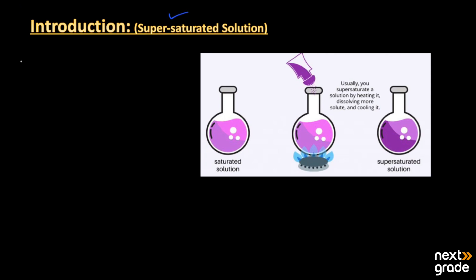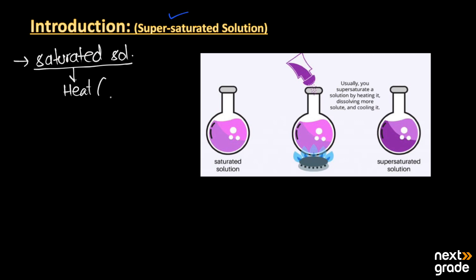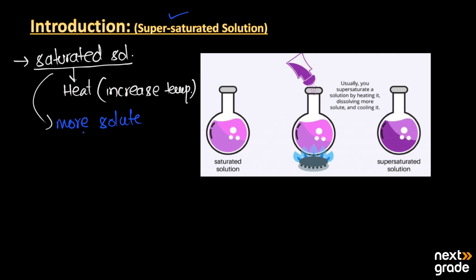To prepare a super saturated solution, for example, we already have a saturated solution. You must keep in mind what a saturated solution is — it is a solution that has more solute and does not have the capacity to dissolve more solute. Now, if we take a saturated solution and start to heat it, or increase the temperature of that solution, more solute will start to dissolve in it.